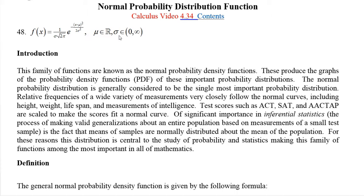It turns out that mu is what we call the mean of the distribution, and sigma is what we call the standard deviation. These graph the probability density function of what's called the normal probability distribution, which is the single most important probability distribution in probability and statistics — basically everywhere. So this turns out to be one of the most important functions in mathematics.